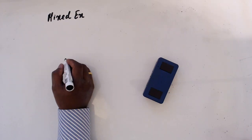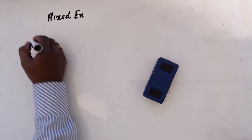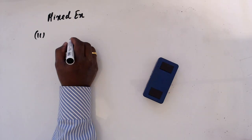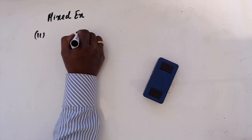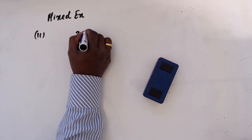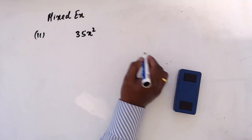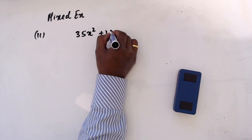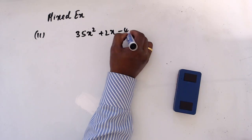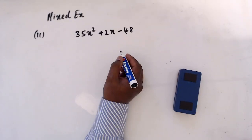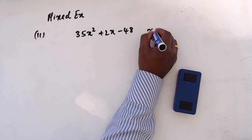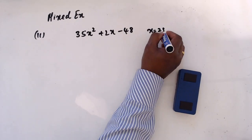This is question number 11. Please read the question. Find the value of 35x² + 2x - 48 when x is equal to 25.